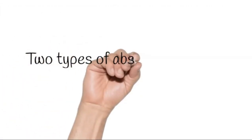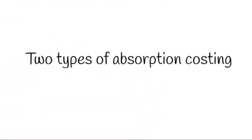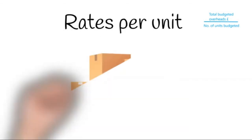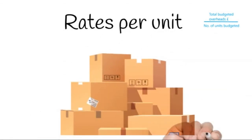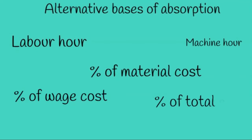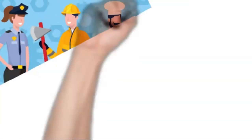There's two different types of absorption costing. Rate per unit is fairly simple, it's the total budgeted overhead cost divided by the number of units budgeted. The alternative basis of absorption includes rate per direct labour hour, rate per machine hour, percentage of wage cost, percentage of material cost or percentage of total direct cost also known as prime cost.